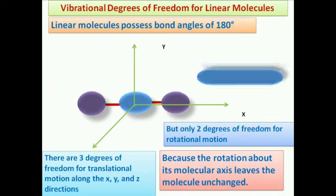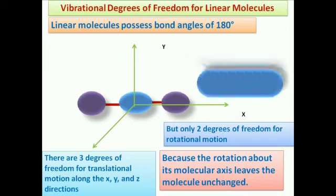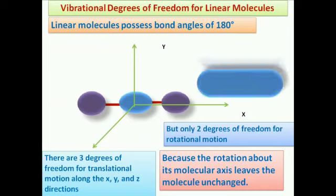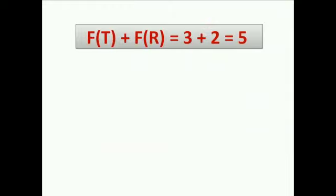Rotation about its molecular axis leaves the molecule unchanged. So in the case of a linear molecule, there are three degrees for translational motion along x, y, and z axes, but only two degrees for rotational motion. The sum of rotational and translational degrees of freedom gives three plus two, which equals five.